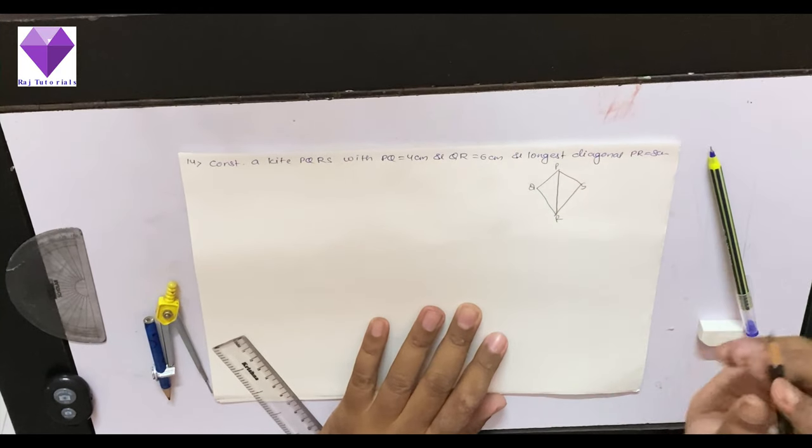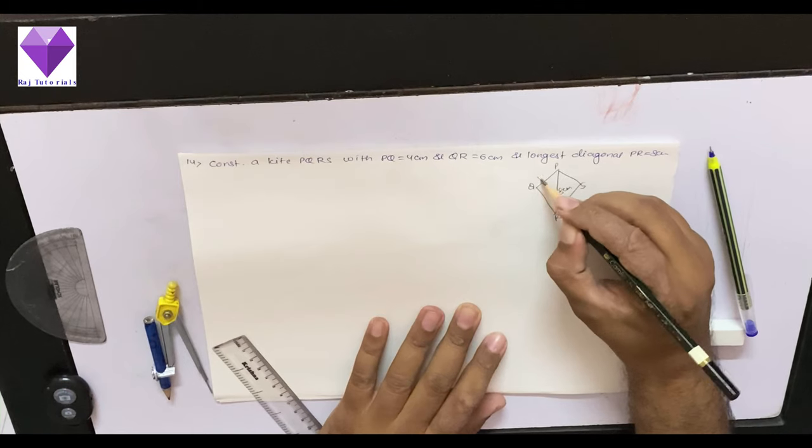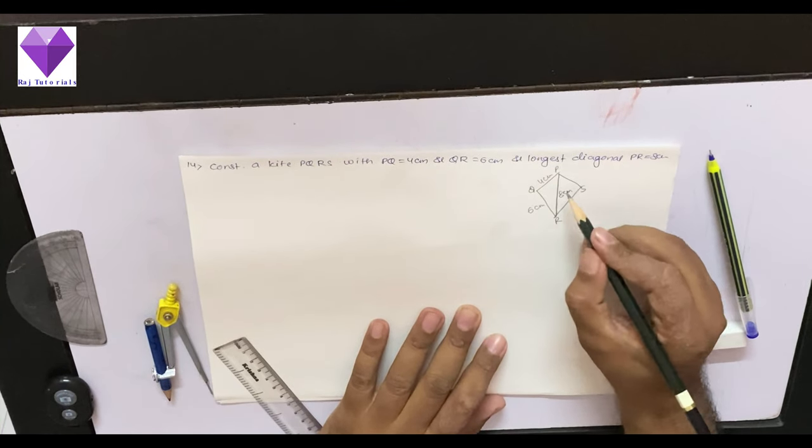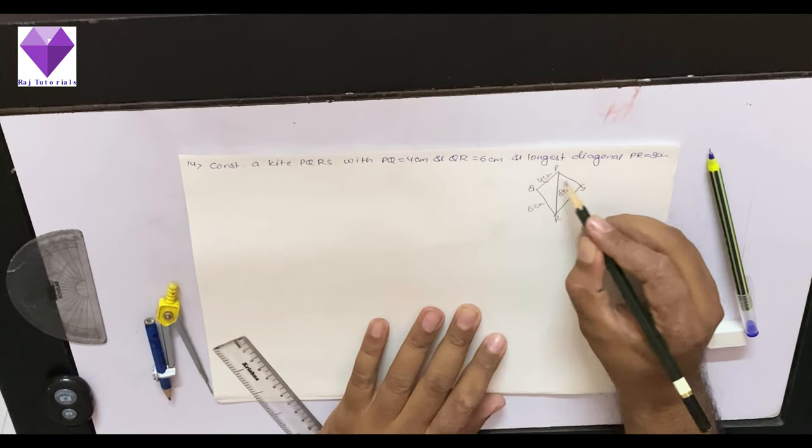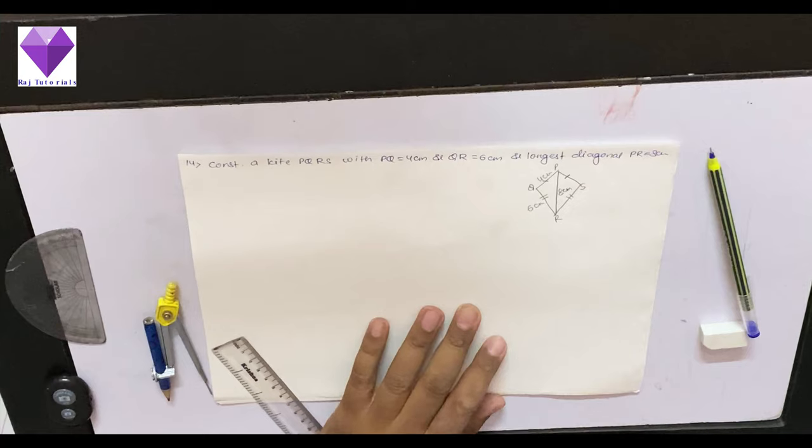Now here PR is given as 8 cm, PQ is given as 4 cm, and QR 6 cm. So we know that the opposite sides of kite are equal. So that property I will be using here.